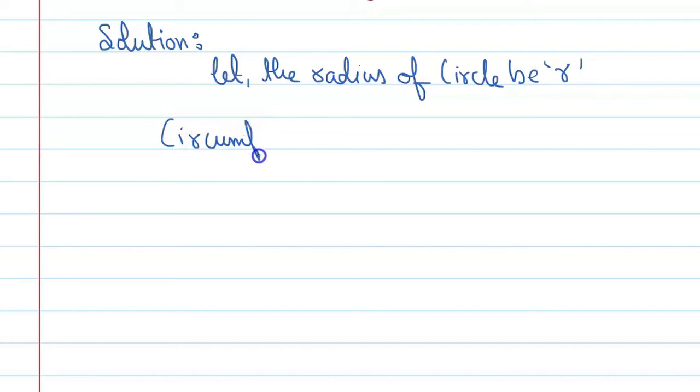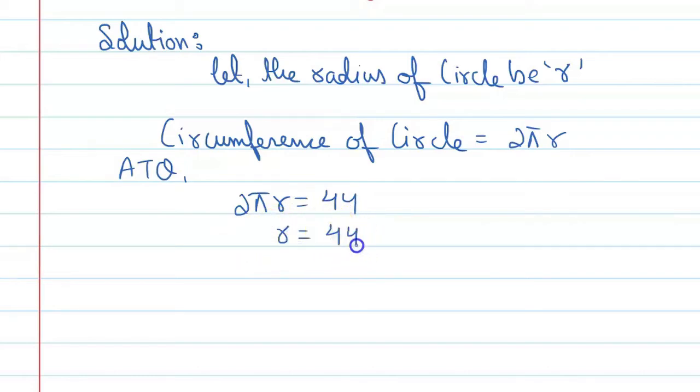Circumference of a circle is 2 pi r. So according to question, 2 pi r is equal to 44. Here we can find r's value. r is equal to 44 into 7 upon 2 into 22.